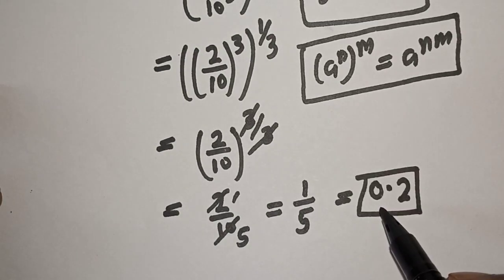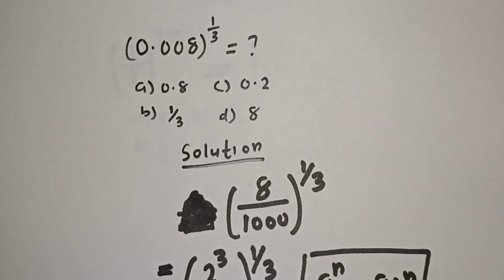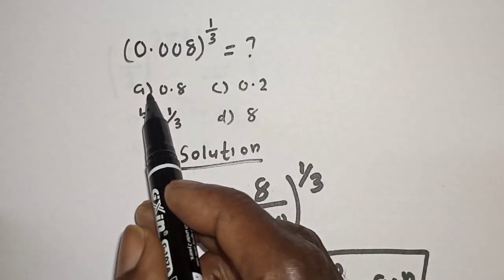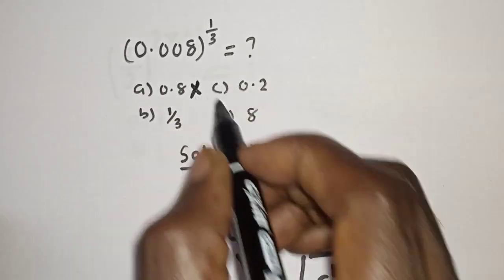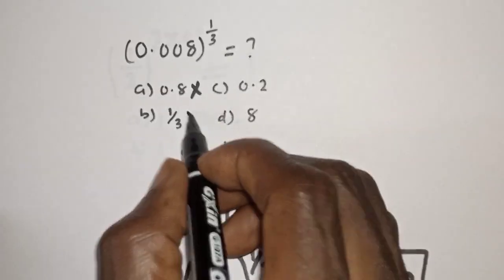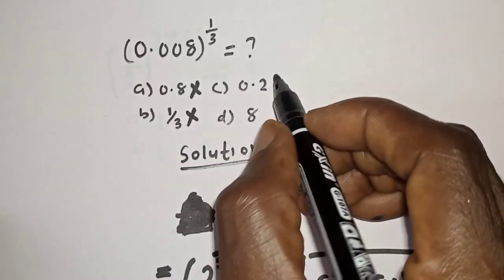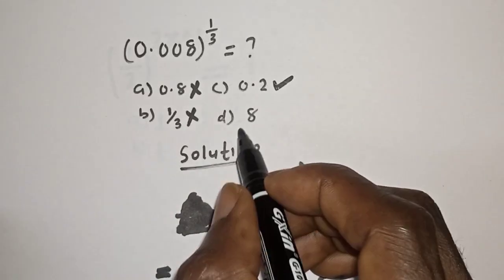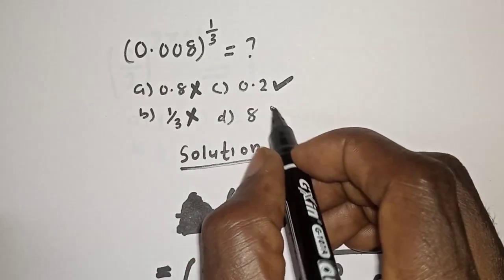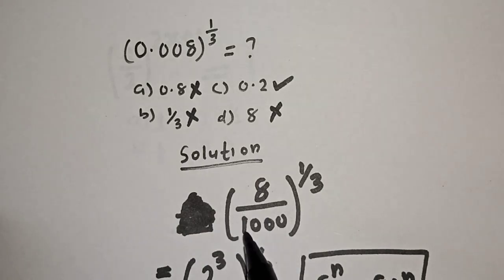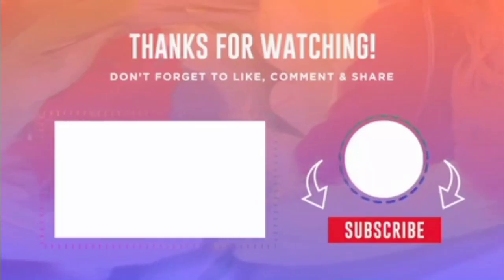Let's check the correct option. We have the following options: a is equal to 0.8, no. B is equal to 1 over 3, no. C is equal to 0.2, yes. And d is equal to 8, no. If you enjoyed the class, please don't forget to like, share, comment, and subscribe. Thank you.